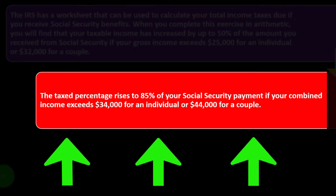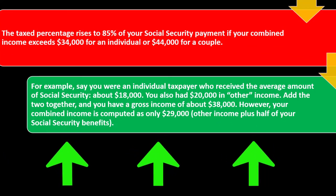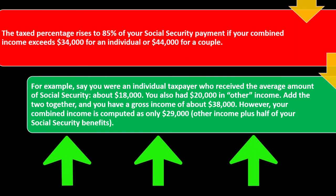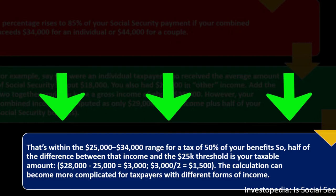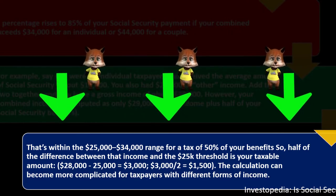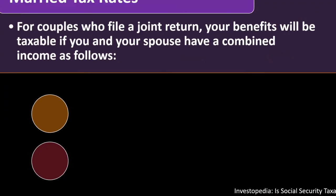The tax percentage rises to 85 percent of your Social Security payment if combined income exceeds $34,000 for an individual or $44,000 for a couple. For example, say you're an individual who received the average Social Security amount of about $18,000, and also had $20,000 in other income — gross income of about $38,000. However, your combined income is computed as only $29,000: other income plus half your Social Security benefits. That falls within the $25,000–$34,000 range. Half the difference between $29,000 and $25,000 is $1,500 — that's your taxable amount.